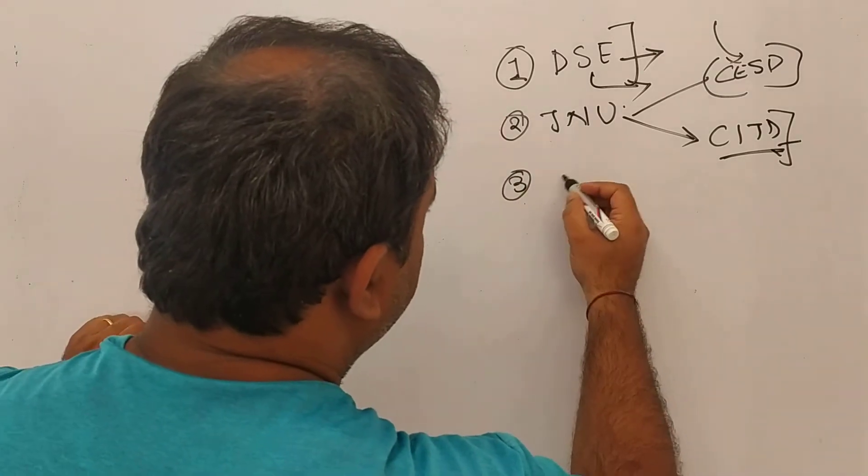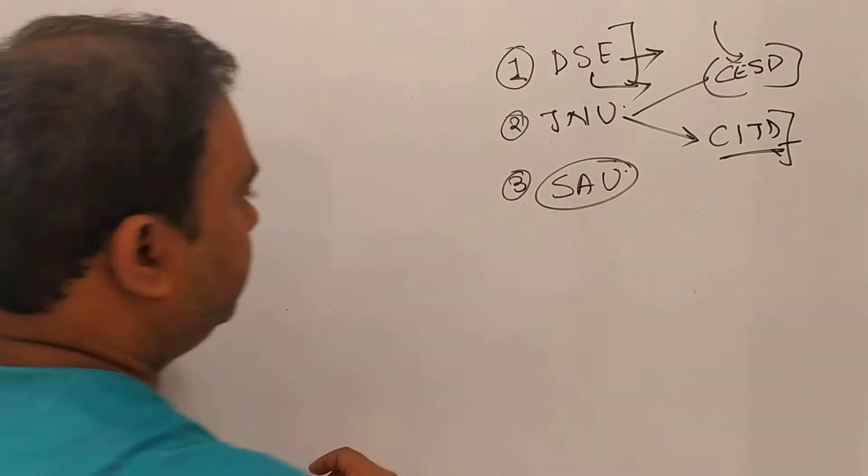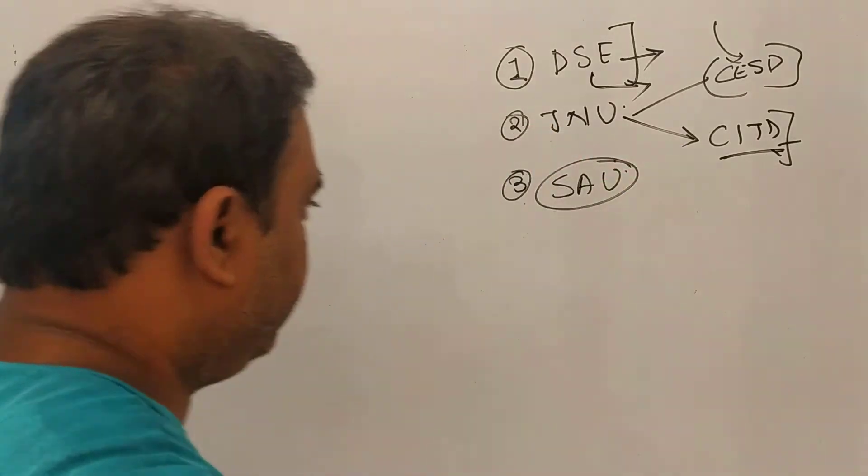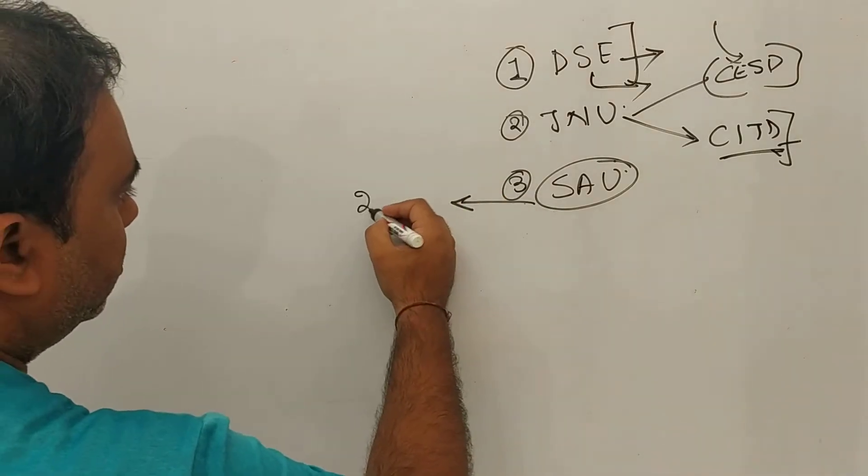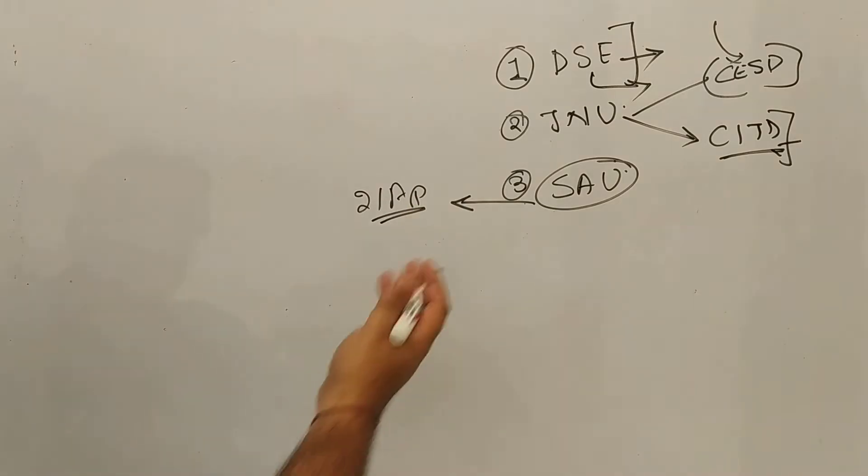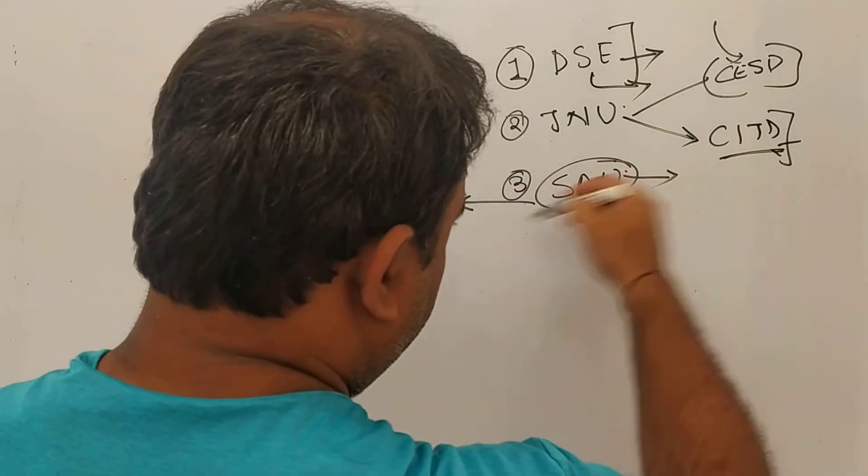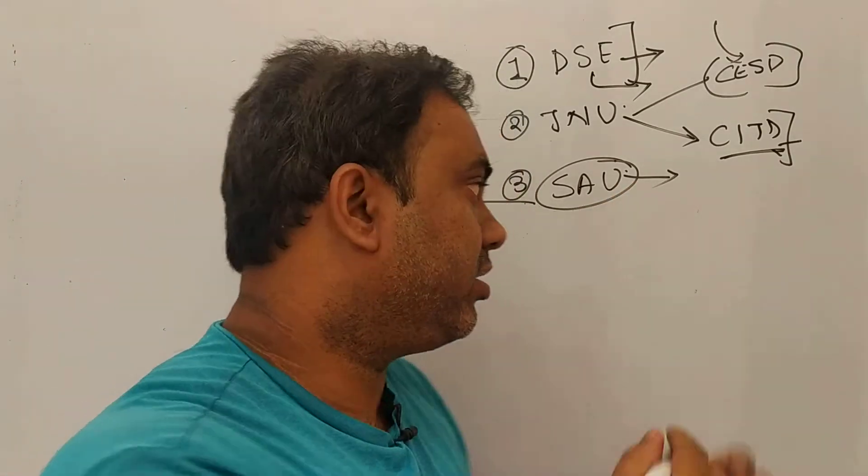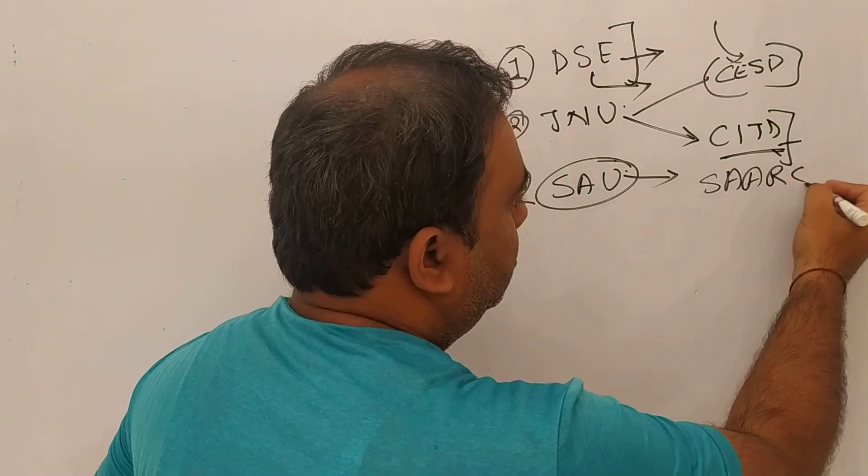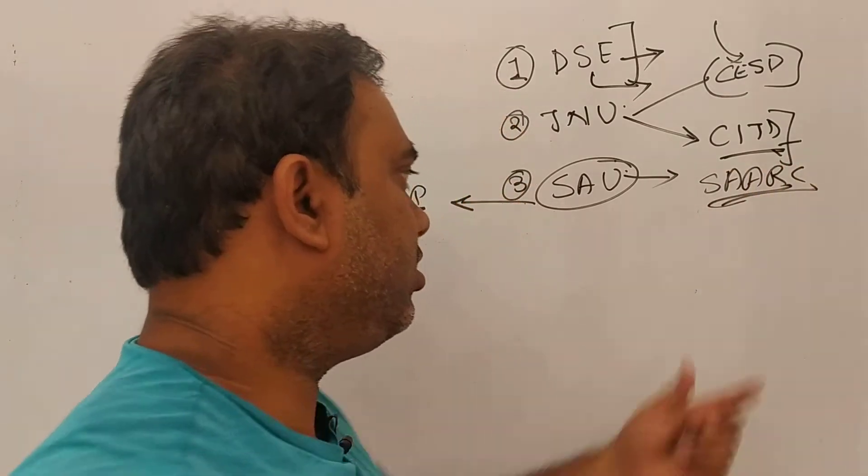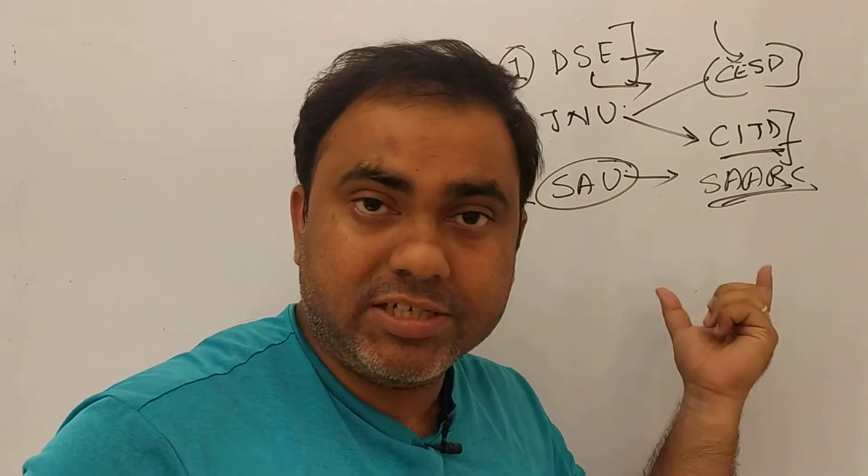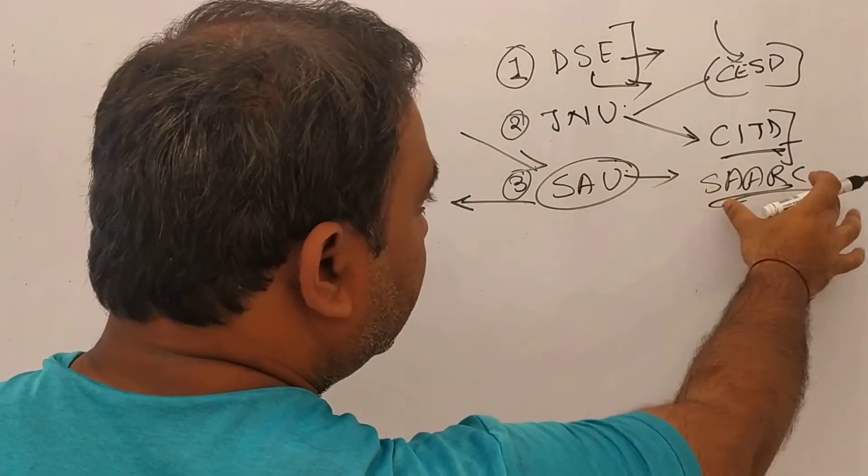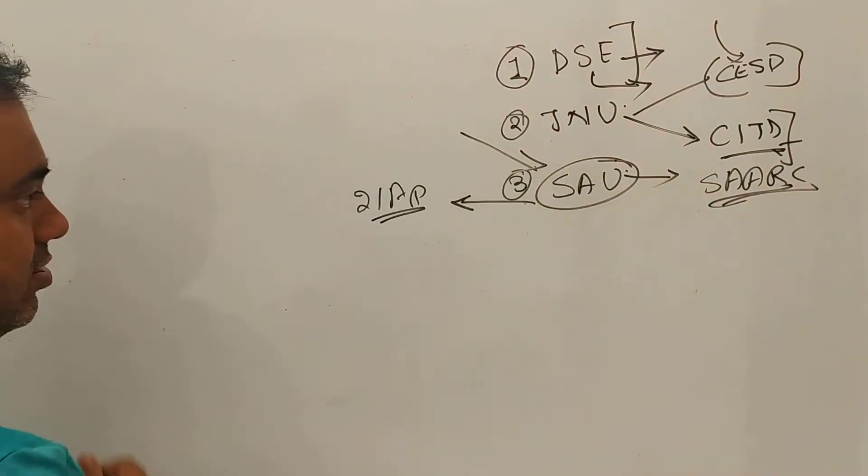Third in the list is SAO, South Asian University. The SAO form has been declared and you can go and fill the entrance form. I think the last date to fill the entrance form is 21st of April. One thing that you get at SAO is that this institution has been created by SAARC nations, South Asian Association for Regional Cooperation, and this institution is based in New Delhi. The students that study over here are from different SAARC countries. So that's the exposure that you get at SAO.